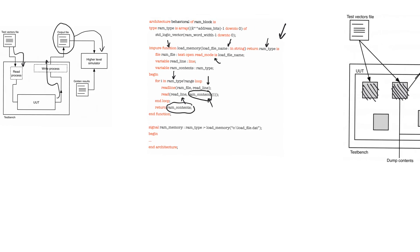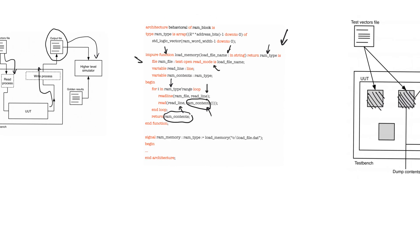Finally, how do you use the load_memory function to initialize RAM values? When you declare the RAM within the signal declaration part of the architecture, you initialize its values using a call to the load_memory function declared above, passing as argument the path of the file prepared with the RAM contents.